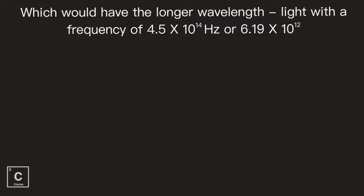I asked this exact same question but this time I made the exponents different. Since we're looking for the longest wavelength, we're looking for the smallest frequency. But when the exponents are different, that's as far as you have to look. What exponent is larger? The 14. So it would be 4.5 times 10 to the 14. Let's do another problem.